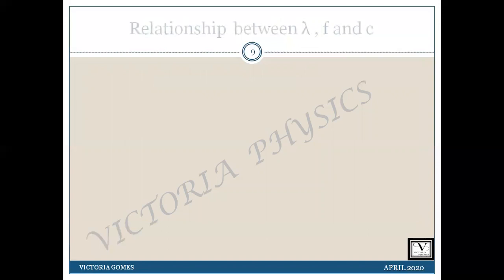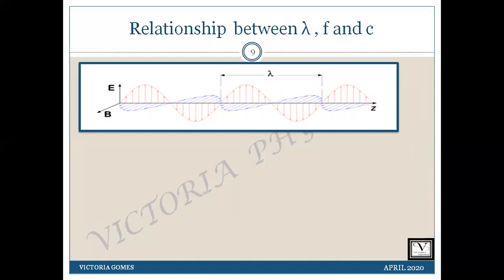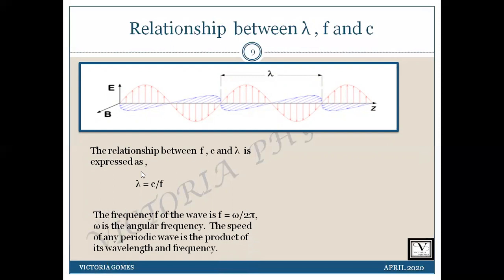This gives us a beautiful relationship between wavelength, frequency, and the speed of a wave. The wavelength of an EM wave is the distance between two successive peaks or valleys of the waveform. The frequency is the number of such waves passing through a given point per unit time. The relationship between frequency, wavelength, and speed is given by this expression, where F is given by omega by 2π, where omega is the angular frequency.